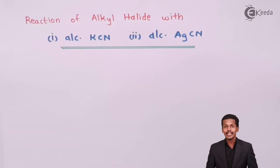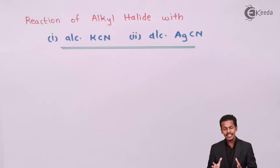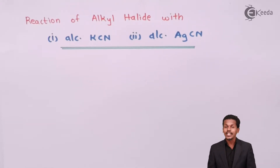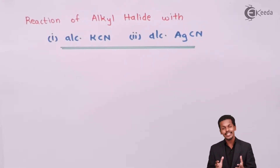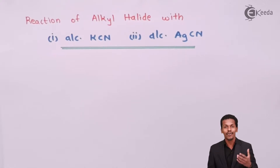Unlike the previous reactions — that is, the reaction of alkyl halide with aqueous KOH solution as well as moist silver oxide — in both those cases we obtained an alcohol, but in this case it is different. Here we are using a different kind of reagent. When an alkyl halide is reacted with KCN solution, and when it is treated with alcoholic AgCN solution, one of these will give an alkyl cyanide while the other will give an alkyl isocyanide. Let us elaborate on this reaction.